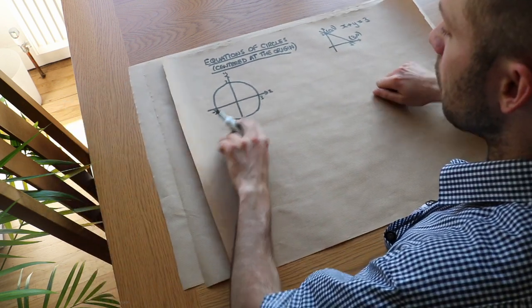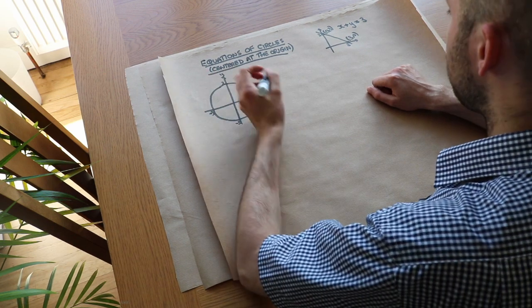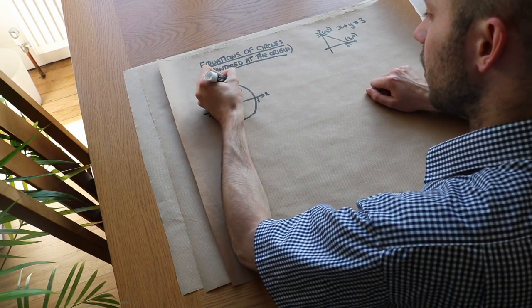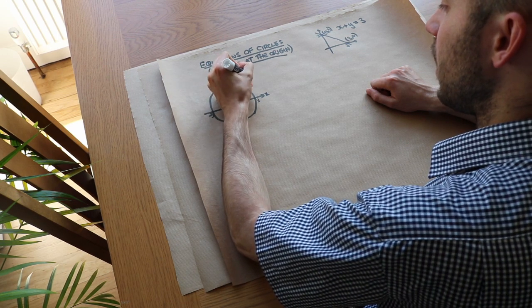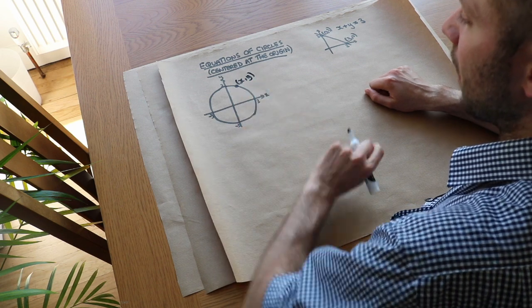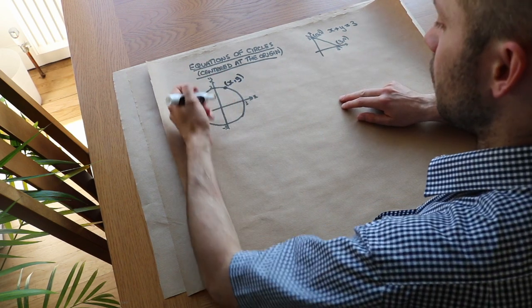So we similarly need to find a membership rule for being on this circle here. So if we just pick some arbitrary point and that's going to have coordinates (x, y), we don't know what it is. But whatever the x and y is, we have to find a rule about x and y that dictates whether it's on this circle or not.